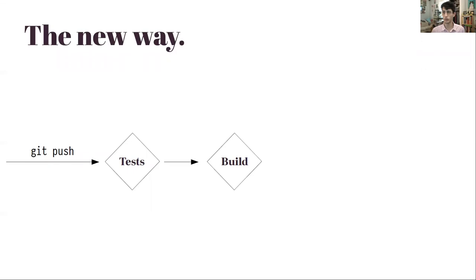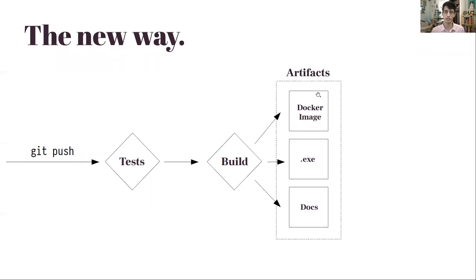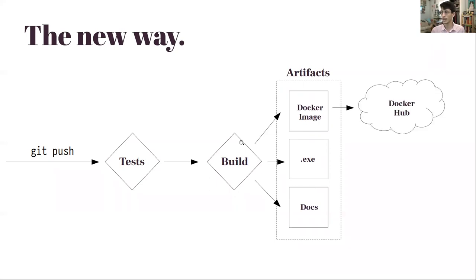If everything passes, it'll run to a build phase. This system will automatically build things and produce what's called build artifacts. Some things that might build: a Docker image could be one, or it could build an executable. It could even build documentation pages - some people have their documentation pages automatically generated from the comments in their code. Whenever you do a commit, it'll automatically build the new documentation pages so the docs are constantly up to date with what's in the code. In our case, we're going to say it builds a Docker image. Our CI system can automatically Docker push that image to Docker Hub.